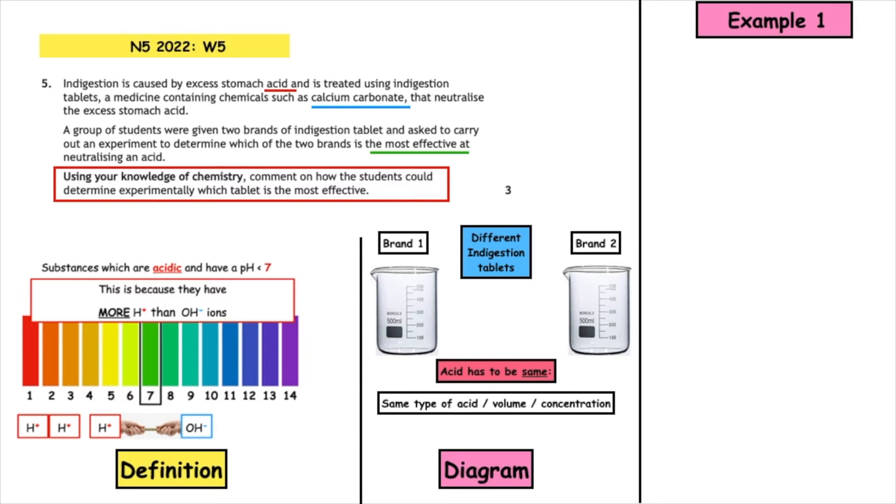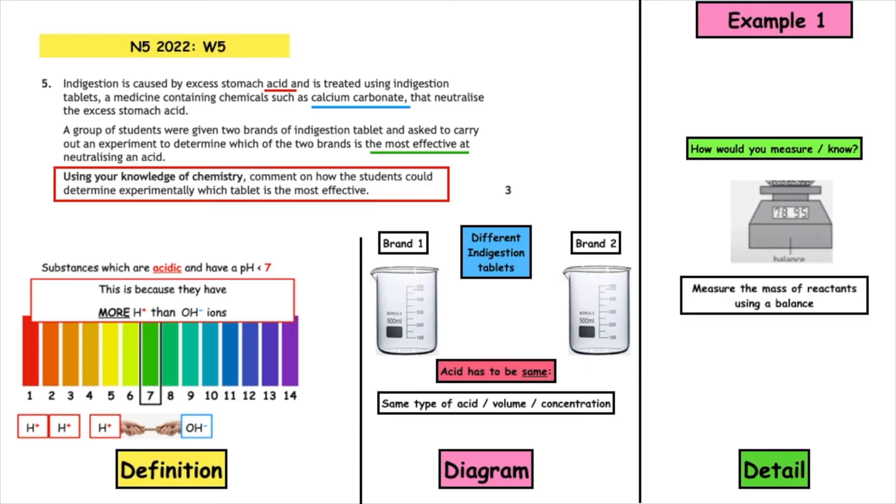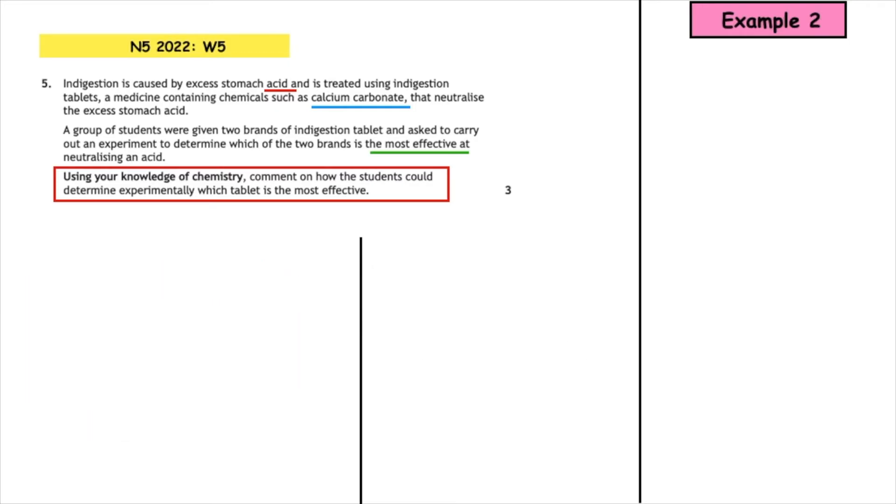Well how would you know which was the most effective at neutralizing the acid? This is where we have to go into a wee bit more detail. So you could measure the mass of reactants being used up using a balance, as carbon dioxide gas would be given off. You would need to use a stopwatch to measure the time, and the one which the mass decreases the fastest would be the most effective. So that's us giving a definition, a diagram, and some detail.